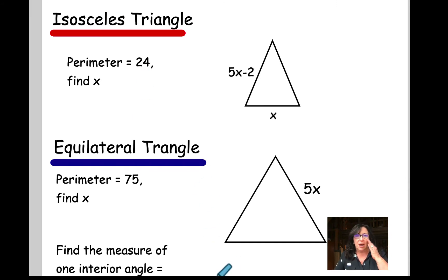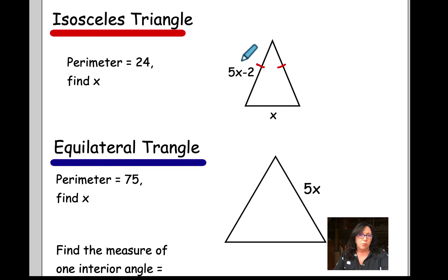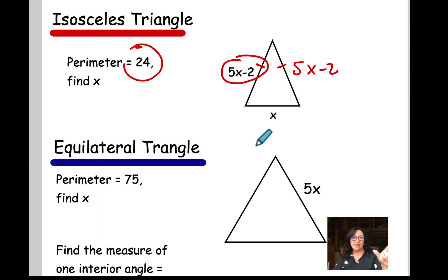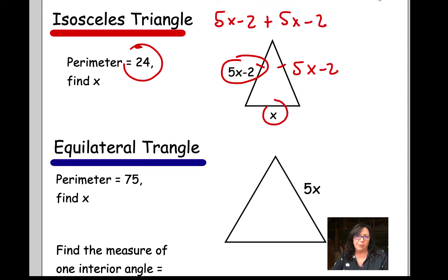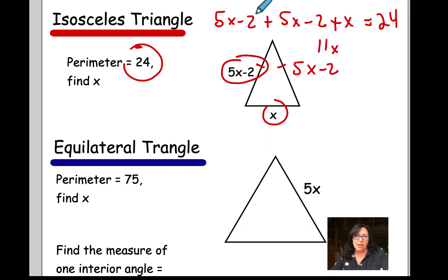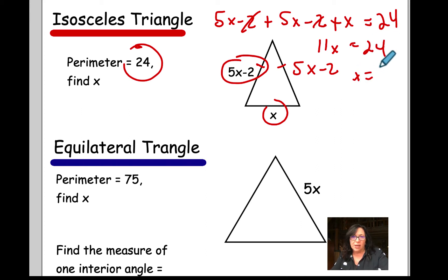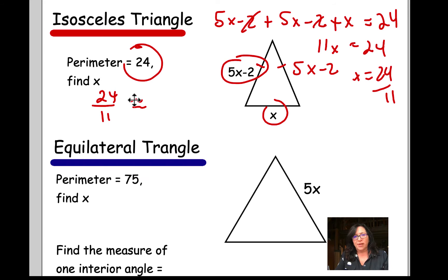For this question, I'm giving you an isosceles triangle. What you need to remember is that both sides are equal. The perimeter is 24, meaning the sum of all sides equals 24. So (5x minus 2) plus (5x minus 2) plus x equals 24. Adding these: 5 plus 5 is 10 plus 1 is 11x. The 2s cancel, so 11x equals 24, giving x equals 24 over 11, which is 2 and 2 over 11.